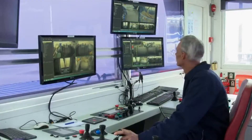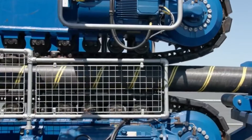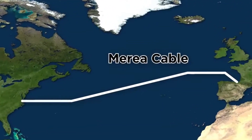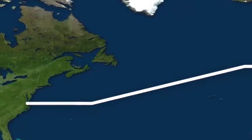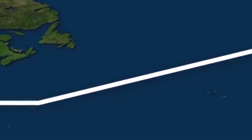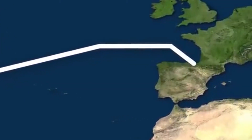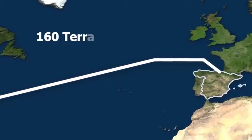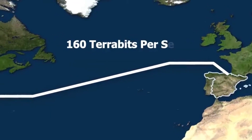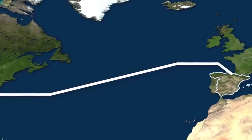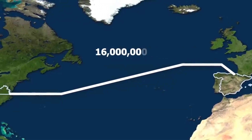Data can be transmitted at tens of terabits per second. Even today, Microsoft and Facebook are funding the installation of an optical cable between the coast of Virginia, United States, to Bilbao, Spain, which can reach data transmission speeds of up to 160 terabits per second — equal to 16 million times the speed of home internet, or streaming 71 million high-definition videos simultaneously.